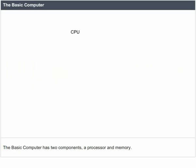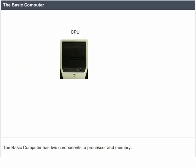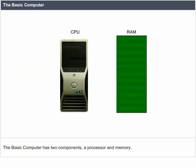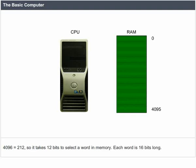The basic computer has two components: a processor and memory. The memory has 4096 words in it. 4096 equals 2¹², so it takes 12 bits to select a word in memory. Each word is 16 bits long.